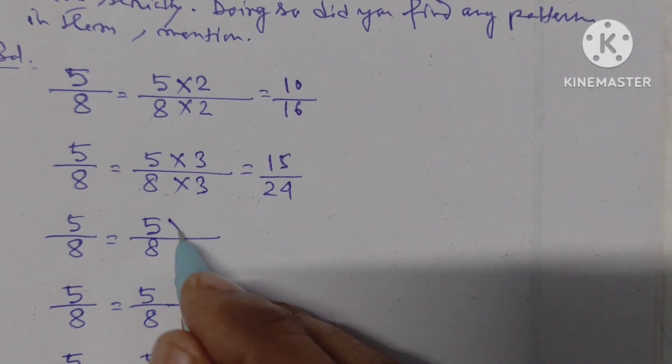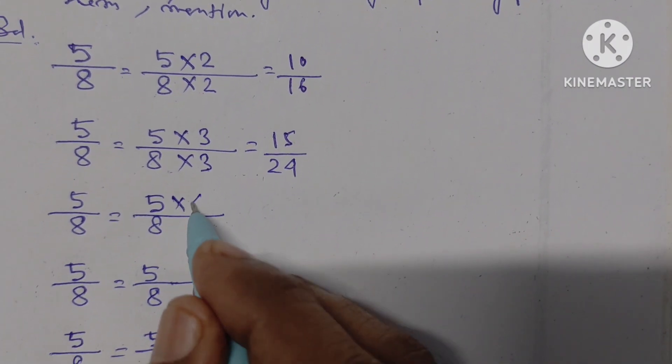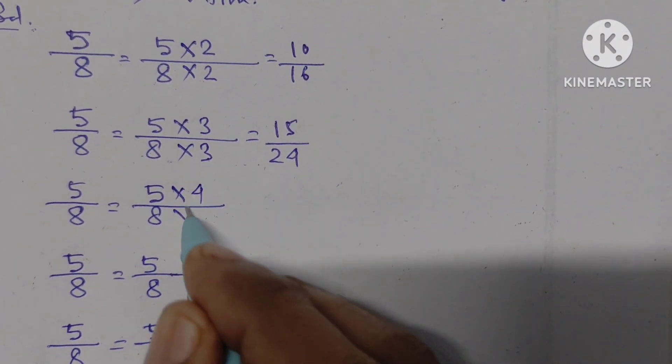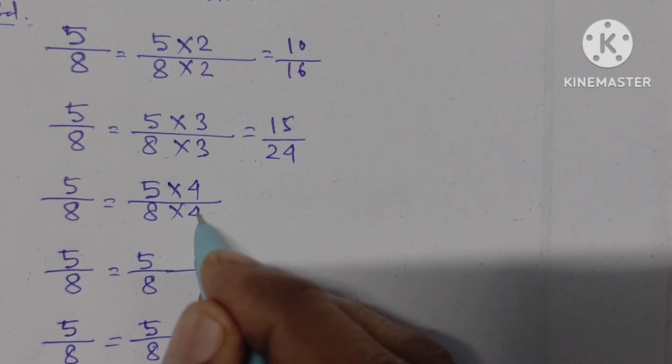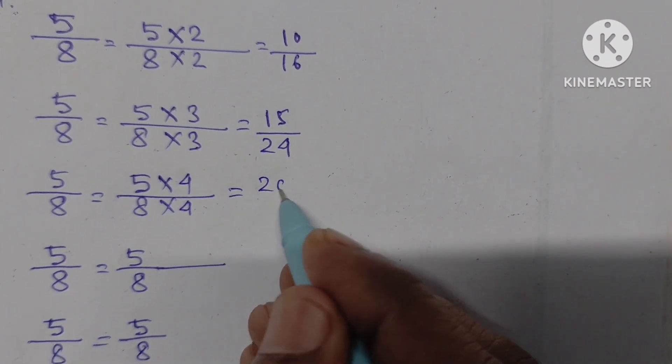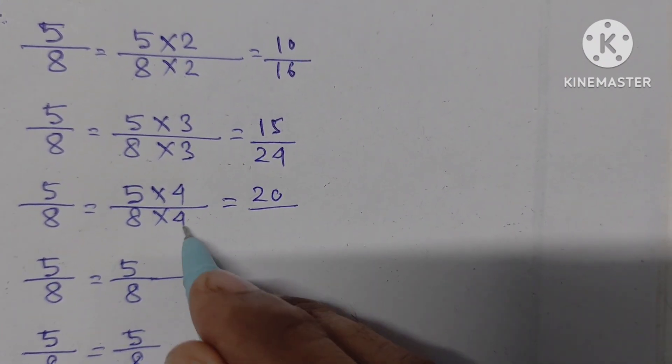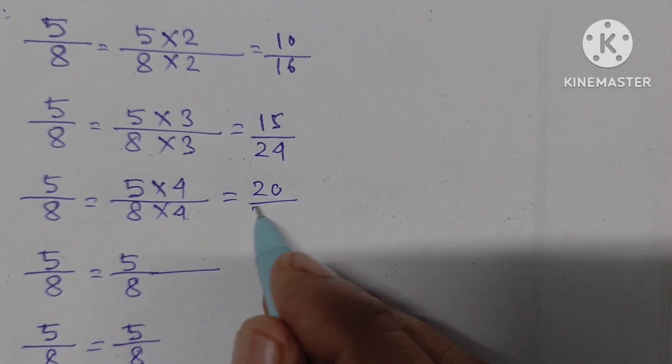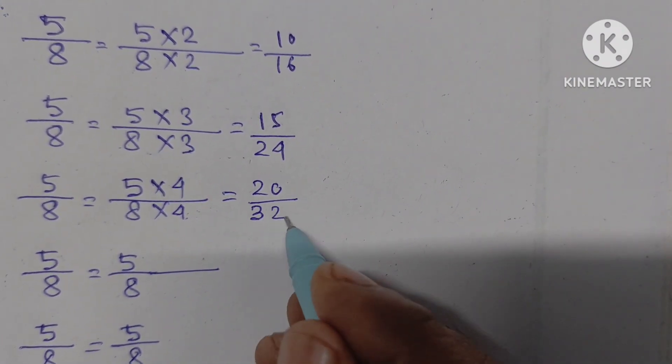Next, we have to multiply by 4. 4 times 5 is 20, 4 times 8 is 32. So the equivalent fraction is 20 by 32.